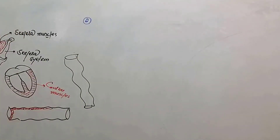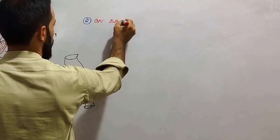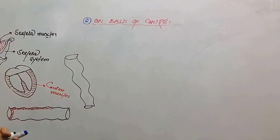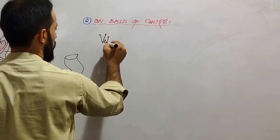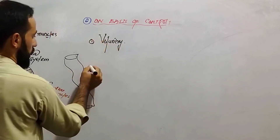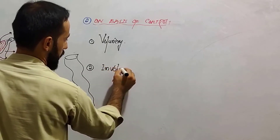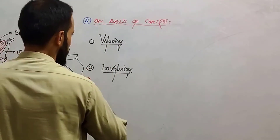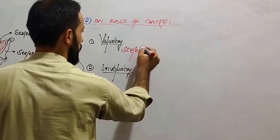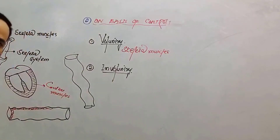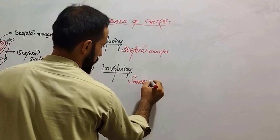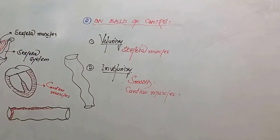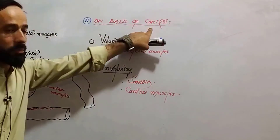So the first classification we did is on the basis of location. The second classification of muscle is on the basis of control. On the basis of control, there are two types of muscles: some muscles are voluntary, and others are involuntary. Voluntary muscles are all skeletal muscles. Involuntary muscles are smooth muscles and cardiac muscles. So this is the second classification — the first on basis of location, the second on basis of control.